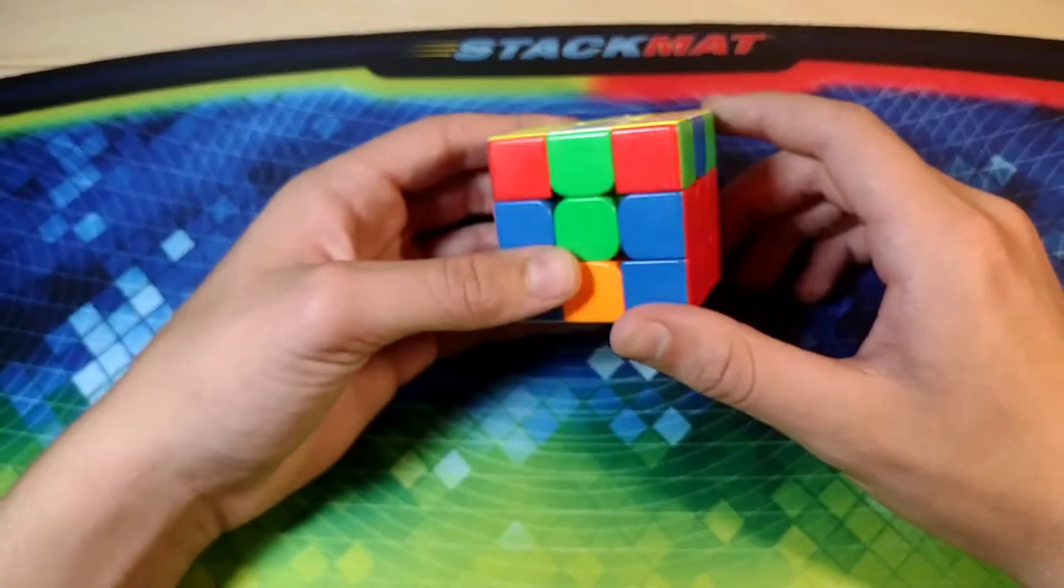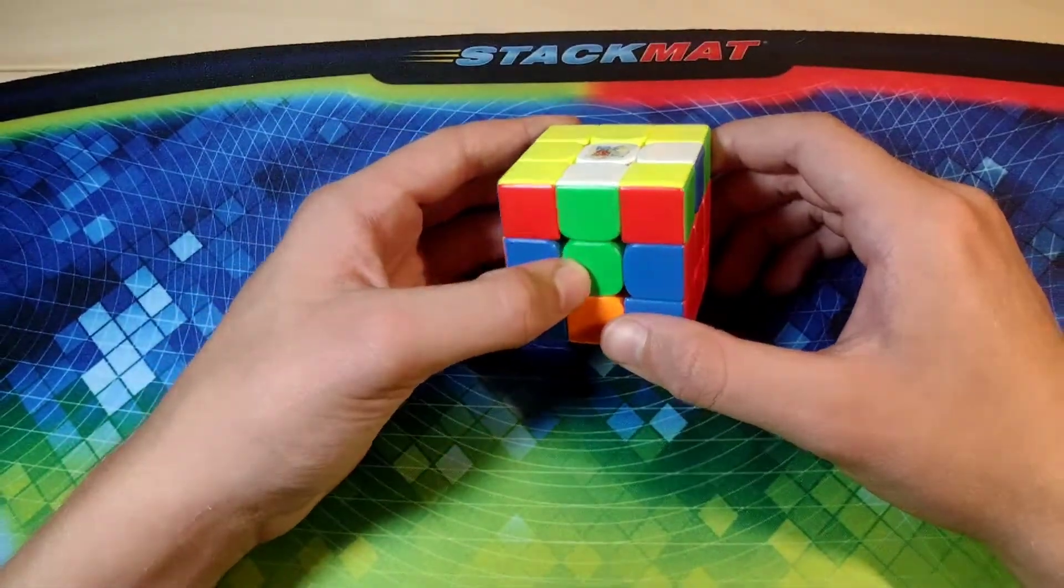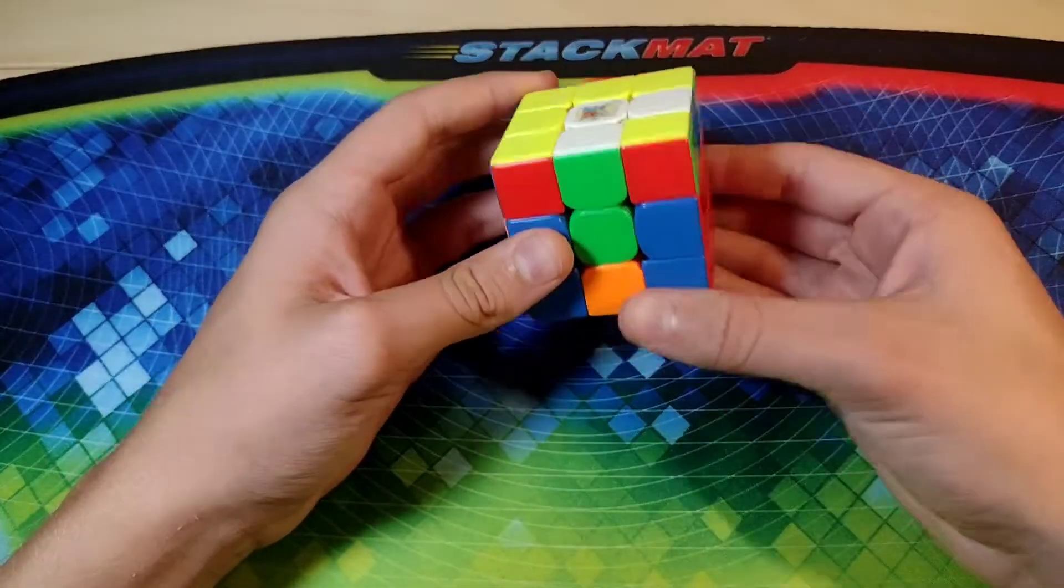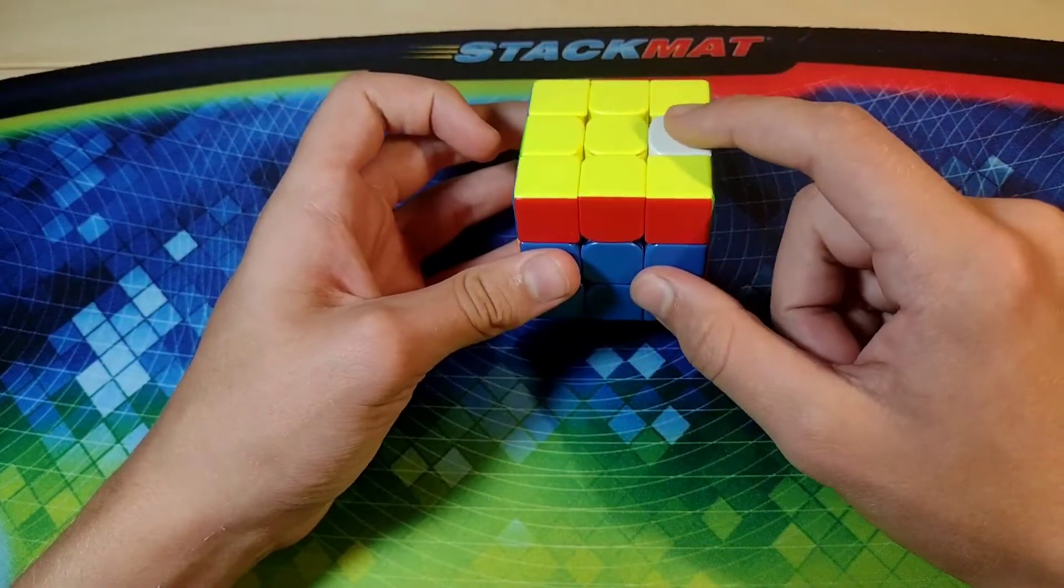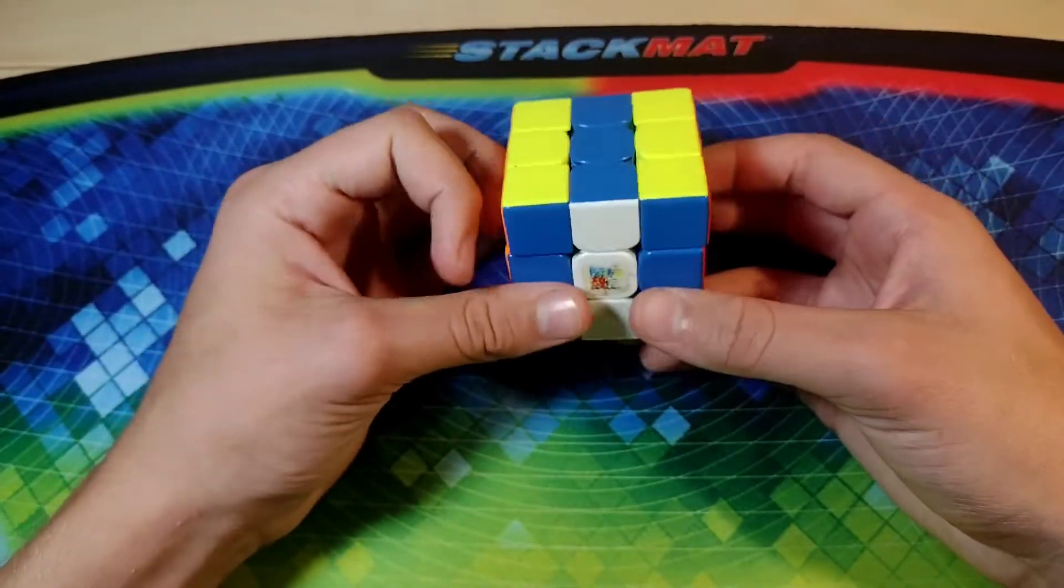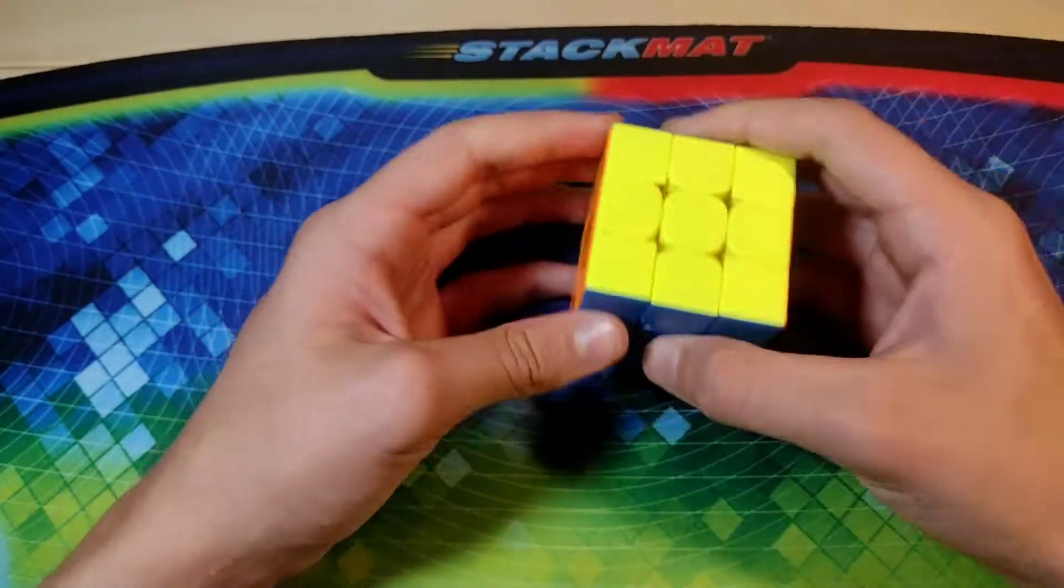Alright. Example one, it looks like we have a matching case because these are the same, green and green. So I will insert, and this is the other white edge, and I will bring that to the front, and then I raise the dot, and it looks like we just have to adjust the M slice like that.